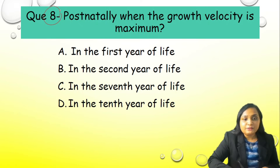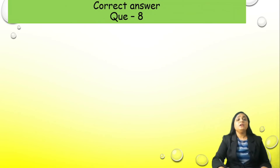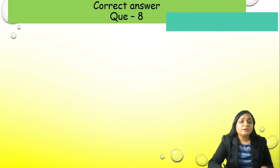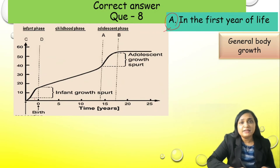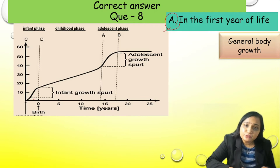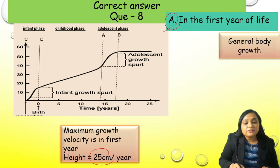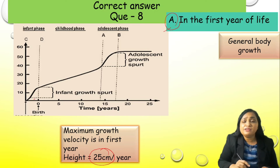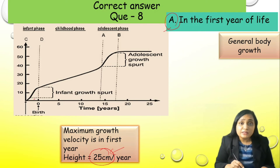Question number 8: Postnatally, when is growth velocity maximum? Options: A) first year, B) second year, C) seventh year, or D) tenth year. Correct answer is option A, the first year. Remember the growth curve — after birth, velocity is maximum in the first few months. In the first year, a baby increases in length by 25 cm, which is the maximum of the whole lifespan.